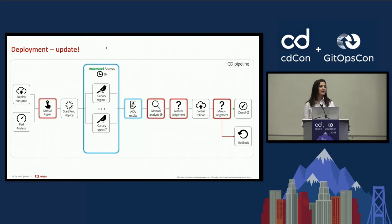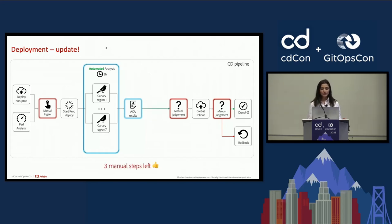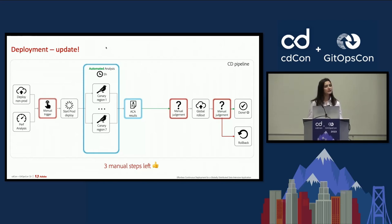With this update, we were able to eliminate one of the most tedious parts of our release process — manual canary analysis — which leaves us with three manual steps. And thanks to automated canary analysis, we are now able to launch canary pods in all seven of our regions, whereas before we could only manage monitoring in two.